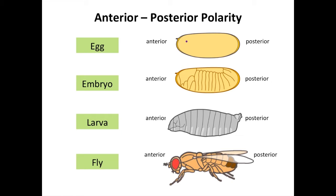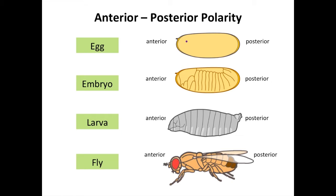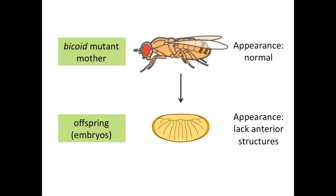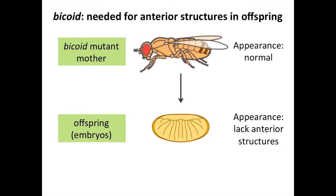For the anterior, the gene Bicoid is key. Bicoid mutants have a somewhat unusual phenotype. If a female fly is homozygous mutant for Bicoid, she herself appears normal, but all of her offspring will show a phenotype, regardless of their own genotype. The phenotype of offspring from a Bicoid mutant mother is that the embryos lack anterior structures, having instead a mirror image duplication of posterior structures. Thus, the normal role of the Bicoid gene is to provide something in the mother that is necessary for development of the anterior end in the offspring embryos.